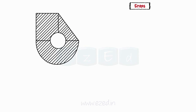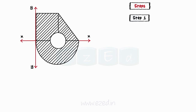Consider a shaded composite figure whose moment of inertia about the XX axis is to be found. Step 1: We will divide the composite figure into regular parts. In the given example, we can divide the composite figure into a rectangle, triangle, semicircle, and circle.